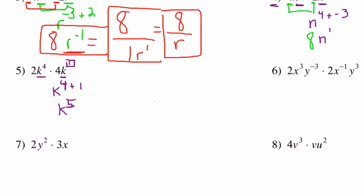Once again, we've got to multiply these two numbers together, and two times four is eight. So this would be 8k to the fifth power.